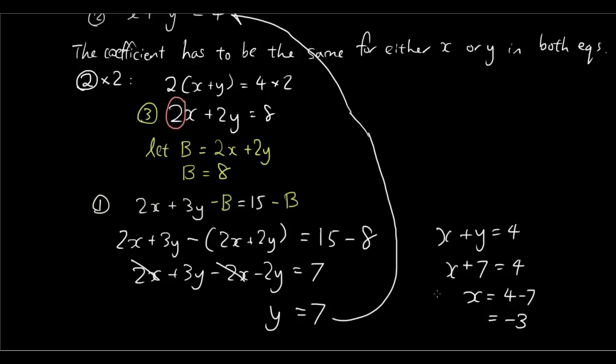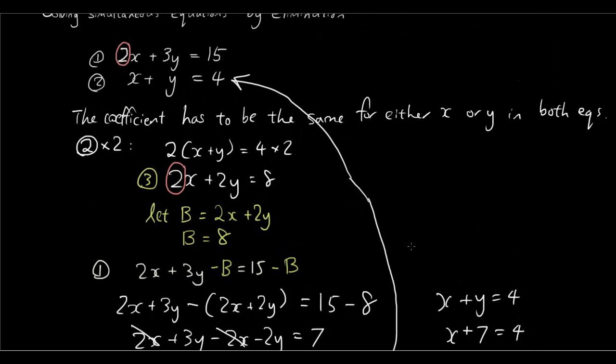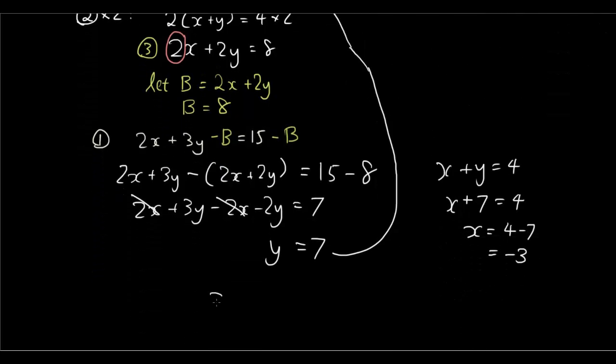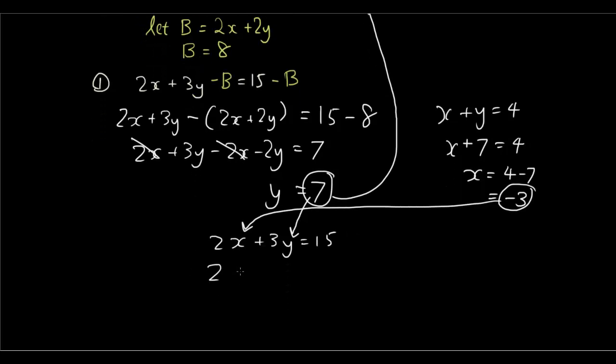Now will these two numbers also work for our other equation which was 2x plus 3y equals 15. So let's test it. 2x plus 3y equals 15. Let's substitute the number 7 into our y in this equation and x equals negative 3 into the x of our equation. So it becomes 2 times negative 3 plus 3 times 7 which equals negative 6 plus 21 which does equal 15.